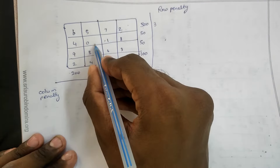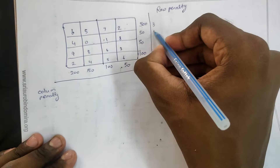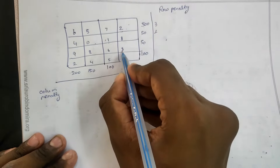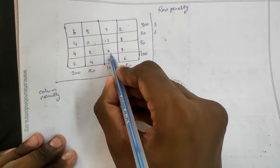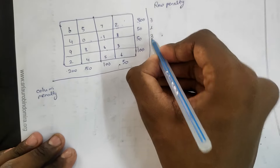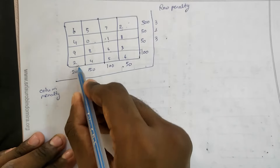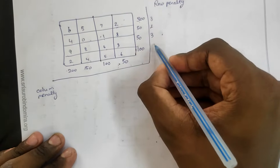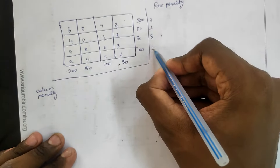In this row, the least is 0 and the next number is 1, so the penalty is 1. Least number 3, the next least is 6, so 6 minus 3 equals 3. Least 2, the next least is 4, so 4 minus 2 equals 2.